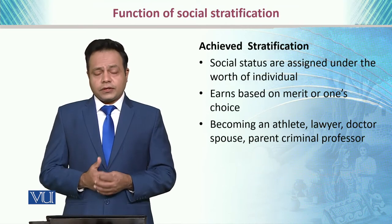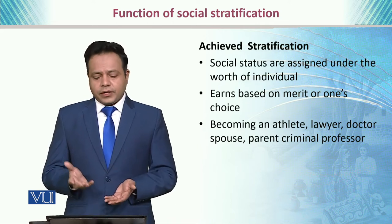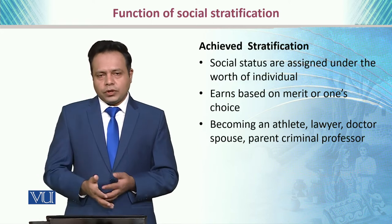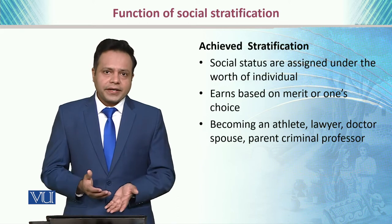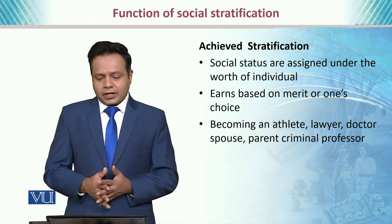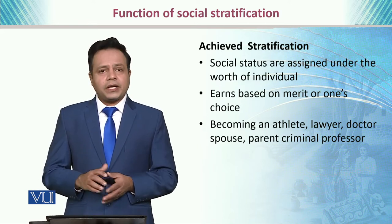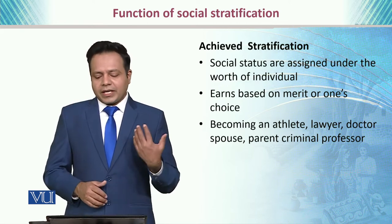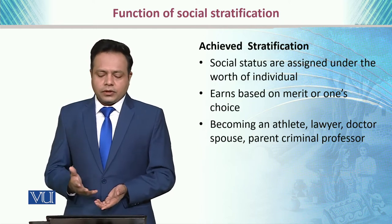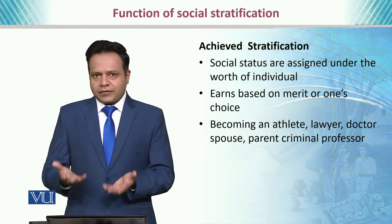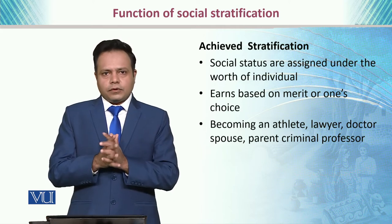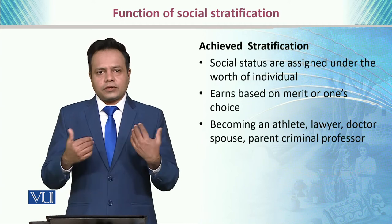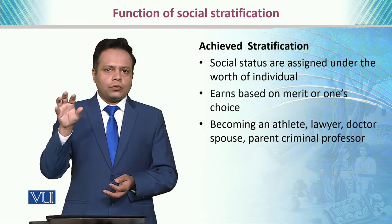Then we have achieved stratification. It means that social statuses are assigned based on the worth of the individual — not by their birth, but by their worth based on what they can do. Achieved stratification has more dynamism and more scope as compared to ascribed status in society. It is earned based on the merit of one's choice and the efforts an individual puts in. So, becoming an athlete, a lawyer, a doctor, a spouse, a parent, or even deciding to engage in deviant or criminal activities — all this falls under achieved status. Based on these achievements, society places you in a certain stratum.